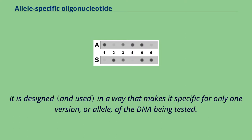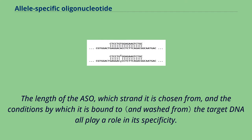The ASO is designed in a way that makes it specific for only one version, or allele, of the DNA being tested. The length of the ASO, which strand it is chosen from, and the conditions by which it is bound to the target DNA all play a role in its specificity.